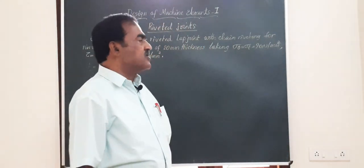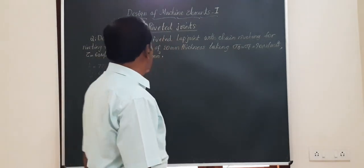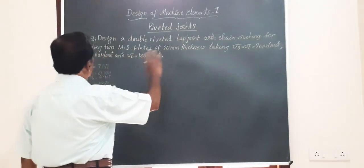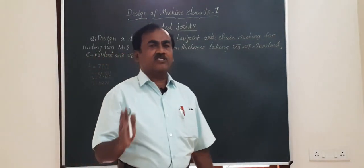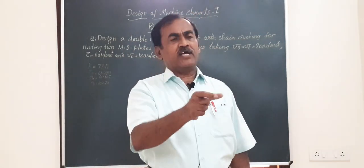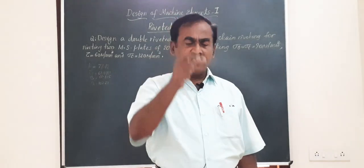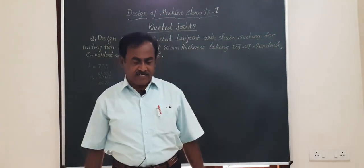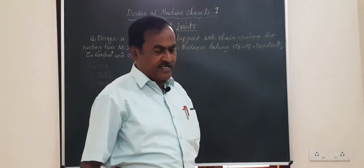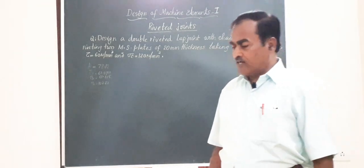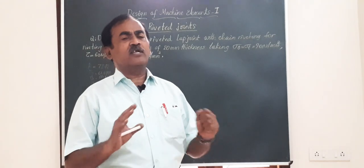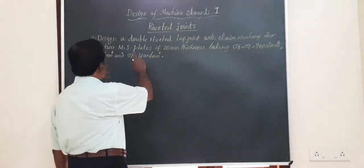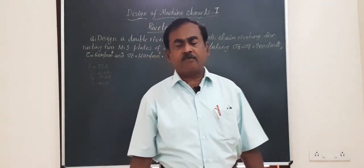Before starting the actual problem, I will give you a clue on how to use the data handbook. In all machine design data handbooks, there is a table for riveted joints giving the type of joint, shear strength, tensile strength, longitudinal pitch, transverse pitch, etc. When you have a problem on a riveted joint, open the data handbook and find the table with full information about the double riveted lap joint.